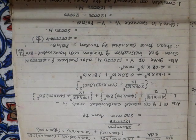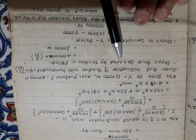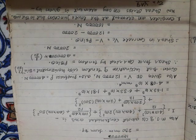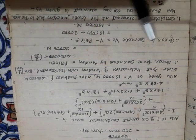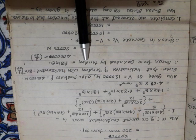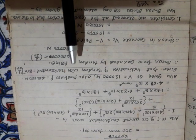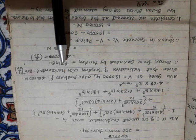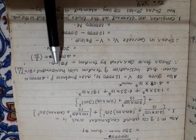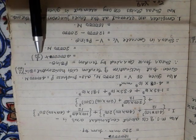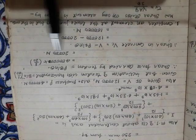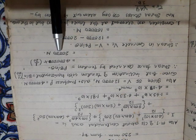We now calculate the shear force carried by the tendon. As established earlier, an inclined cable carries shear equal to P·sinθ. Here P = 4,00,000 N and sinθ = 1/20, so P·sinθ = 4,00,000 × (1/20) = 20,000 Newtons. This inclined cable therefore carries a shear force of 20,000 N.